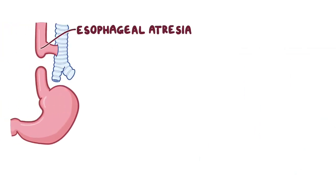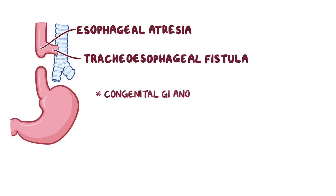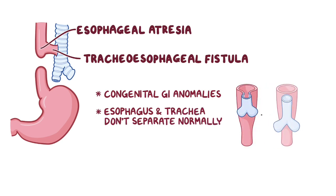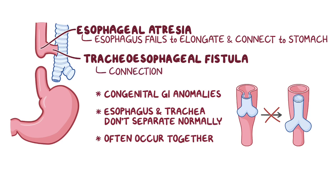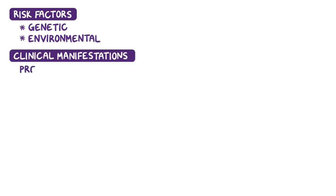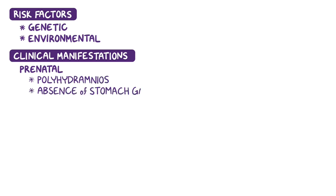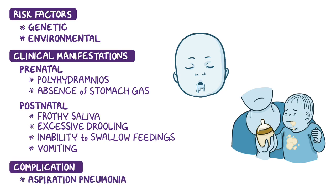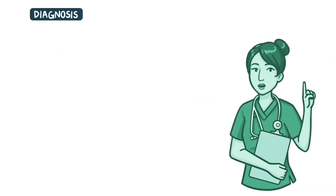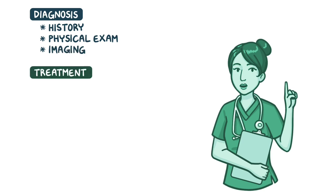As a quick recap, esophageal atresia and tracheoesophageal fistula are congenital gastrointestinal anomalies where the esophagus and trachea don't separate normally during development, and both conditions often occur together. With esophageal atresia, the esophagus fails to elongate and connect to the stomach, and tracheoesophageal fistula is a connection between the trachea and esophagus. Risk factors can be genetic or environmental. Clinical manifestations in the prenatal period are polyhydramnios and the absence of stomach gas. Postnatal manifestations include frothy saliva, excessive drooling, inability to swallow feedings, and vomiting. The major complication is aspiration pneumonia. Diagnosis is through history, physical examination, and imaging. Treatment is by surgical correction.